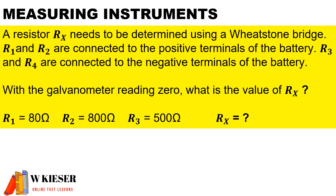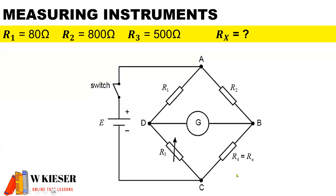For the final question on measuring instruments, a resistor RX needs to be determined using a Wheatstone bridge. R1 and R2 are connected to the positive terminals of the battery; R3 and R4 are connected to the negative terminals of the battery. With the galvanometer reading zero, we need to find the value of RX. In the diagram, R1 is 80 ohms, R2 is 800 ohms, and R3 is 500 ohms.